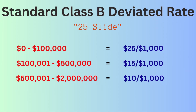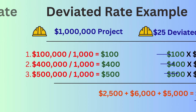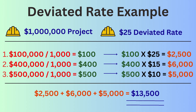Things get more complicated when you have a deviated rate. A deviated rate means that the rate changes based on the project's size — the rate gets smaller as the project gets bigger. A standard $25 class B deviated rate, known in the industry as a '25 slide,' is typically $25 for the first $100,000 of contract value, then $15 for the next $400,000, and then $10 for the next $2 million of contract value.